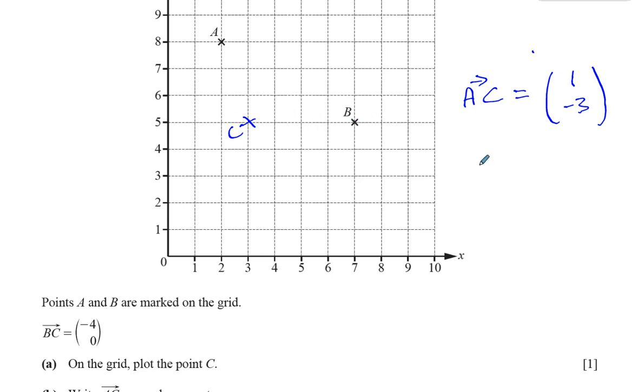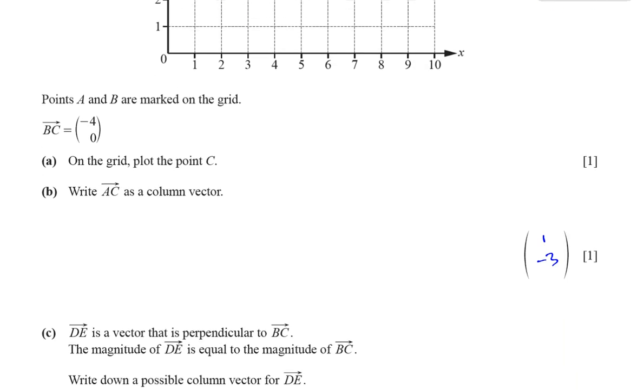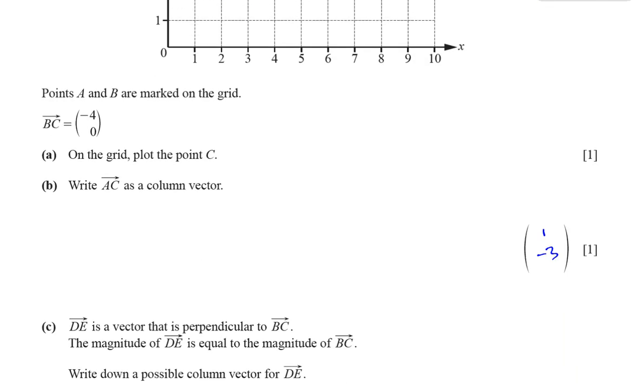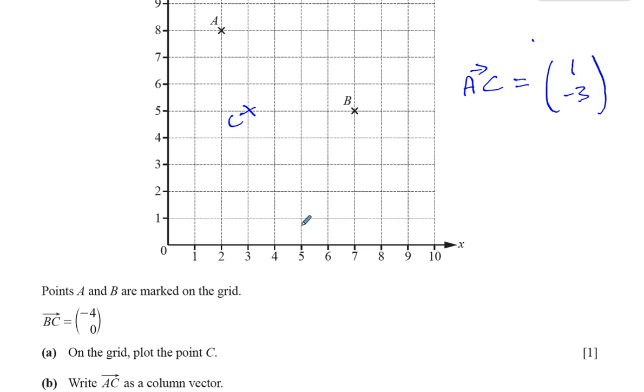So B to C is minus 4, 0, it's a horizontal line. And D to E is perpendicular. So D to E must be a vertical line. So possible vector for D to E, it has to be vertical. So that means it doesn't move in the horizontal direction, so the top number must be 0, this vertical vector.